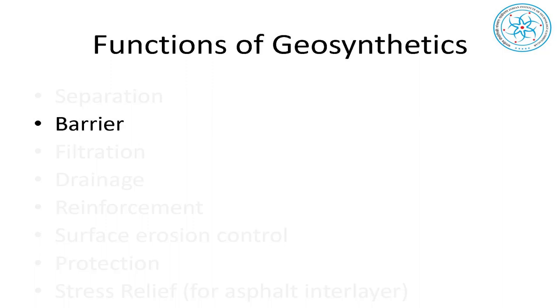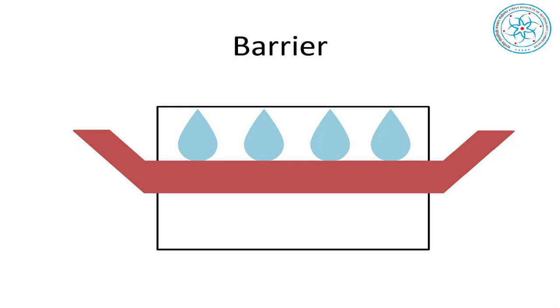Barrier function is essentially to prevent water or any other fluid flow — even leachate flow in landfills — and also to control gases, because waste produces gases during biological decay. We have to collect it and use it if possible. The leachate trying to come down is not allowed because the geosynthetic becomes a barrier. Geomembrane performs this function excellently.